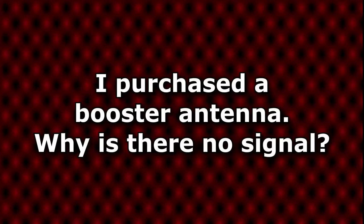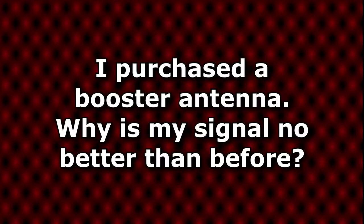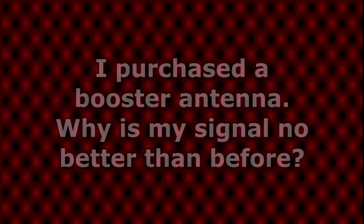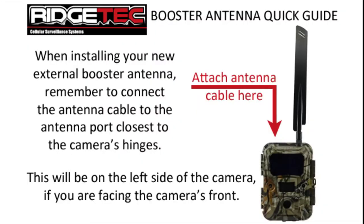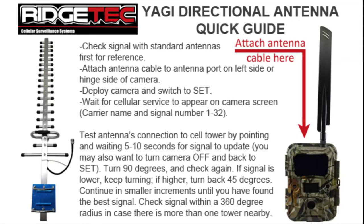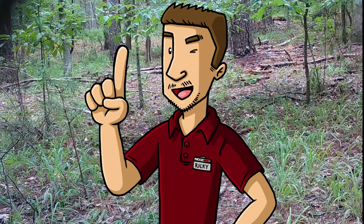I purchased a booster antenna. Why is there no signal, or why is my signal no better than before? First, make sure the booster antenna cable is plugged into the port on the left or hinge side while facing the front of your camera, as this is your primary antenna port. If you're using the Yagi directional antenna, verify that you've located the closest cell tower and are pointing the antenna in that direction. Watch the signal number as you adjust the direction of your antenna, giving it a few seconds to refresh with each adjustment. Also, make sure one of your original antennas is attached to the port on the right side of the camera.